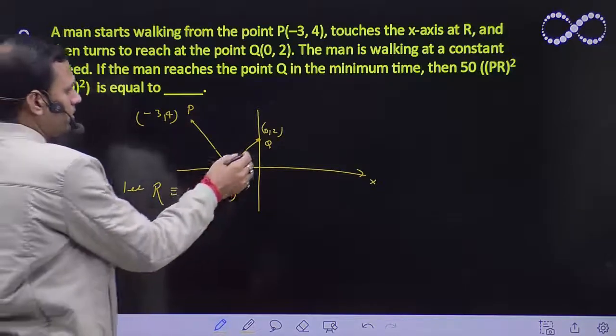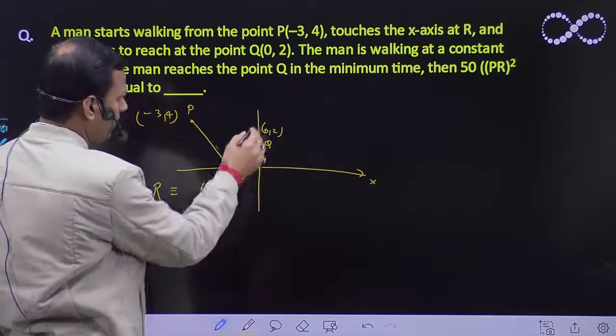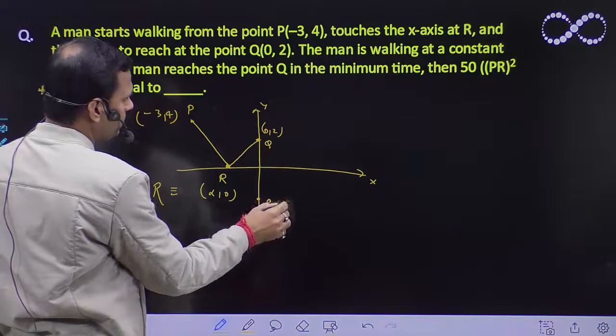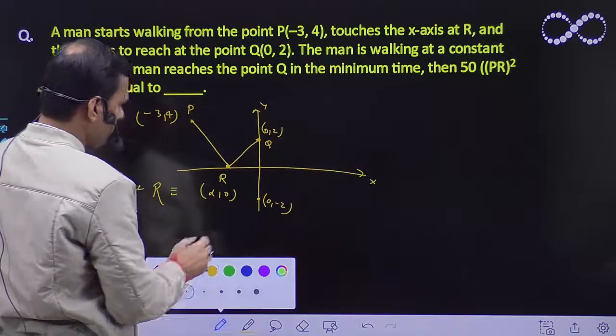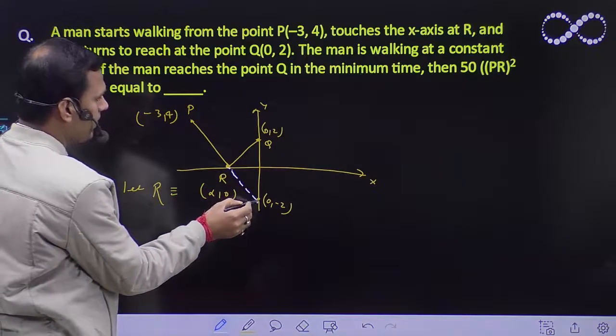For Q, if we take the image on the y-axis, this point will become Q', which is (0, -2).